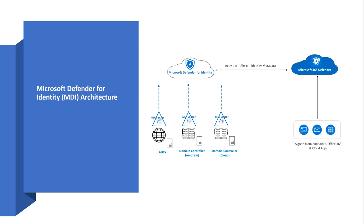The architecture is pretty straightforward. On domain controllers and ADFS servers, you install the MDI sensor. Installing the MDI sensor is very simple, with a very small footprint and minimal compute requirements. As soon as you install it, it starts sending signals to Microsoft Defender for Identity, which captures and analyzes data in real time, alerting and notifying you to detect, investigate, and hopefully prevent attacks in very early stages.